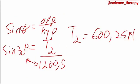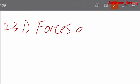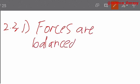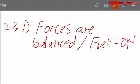For 2.3.1, we know when we see the word constant velocity, what it tells us about our forces is that the forces are balanced. So if the forces are balanced, we know that our F net is equal to 0 newtons. Why? Because our opposite forces will be the same, so they will eventually cancel out, giving us the net resultant force to be 0 newtons.